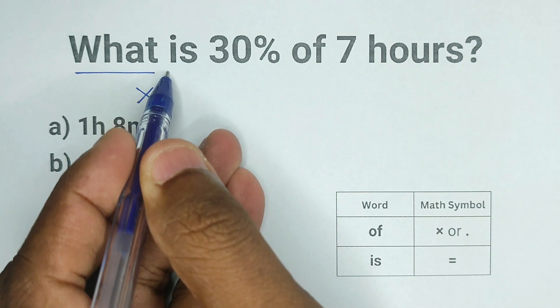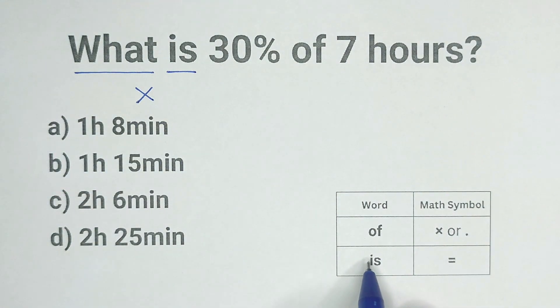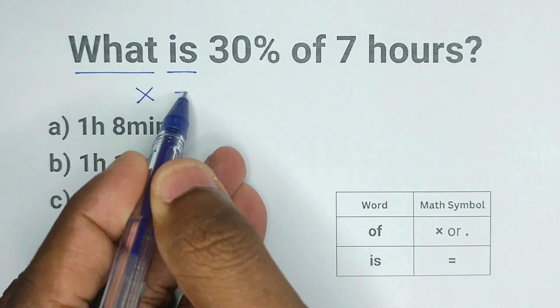The next word is 'is'. And if you look at the chart at the bottom right corner of the screen, the mathematical symbol for the word 'is' is the equal sign. So instead of writing 'is', I'm going to write an equal sign.